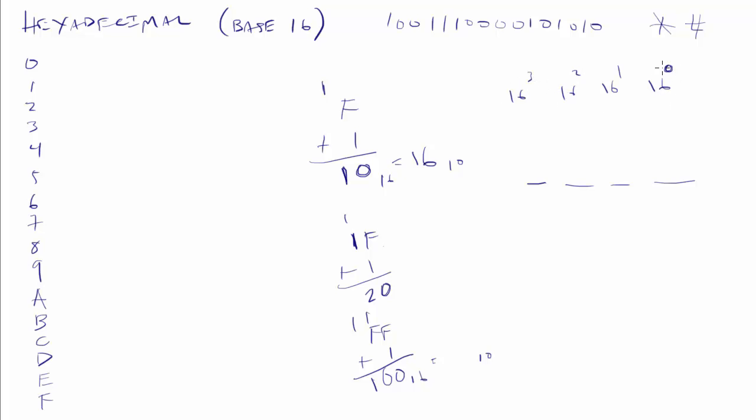Well, 16 to the 0, any number to the 0 is going to be a 1. So any value in this position is worth 1. 16 to the 1, that's easy. That's going to be, any value there is going to be worth 16. 16 squared gets a little more difficult. But as it turns out, you'll start to become familiar with these numbers. That's going to be a 256.